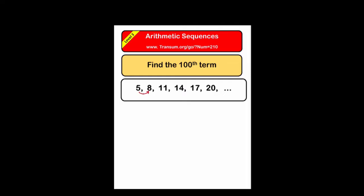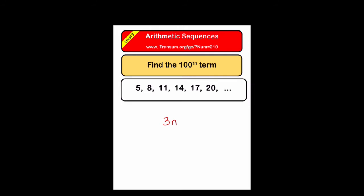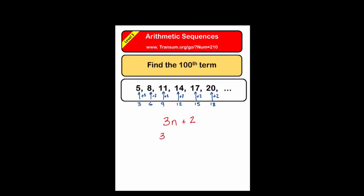Level three asks us to find the one hundredth term of this sequence. You could write it out until you get to the hundredth term, but that would take a long time. The idea is to find the formula for the sequence, just as we did in level two. We're adding three each time, so the common difference is three — a bit like the three times table. Write down the three times table, see that the difference is plus two, and the formula is three n plus two. So three times a hundred add two gives the hundredth term: three hundred and two. Much quicker than writing down all the terms!